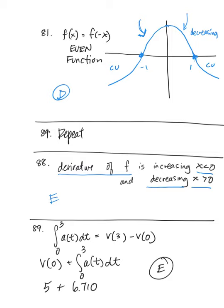In number 89, we're given acceleration and want to find velocity at t equals 3. Using FTC number 1: the integral of acceleration from 0 to 3 equals v of 3 minus v of 0. Rearranging and bringing over v of 0, which is given as 5, then using the calculator to find the integral from 0 to 3 of A of T dt gives 6.710. Adding them together gives choice E.